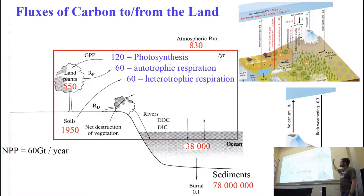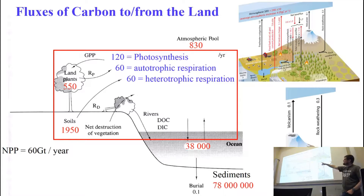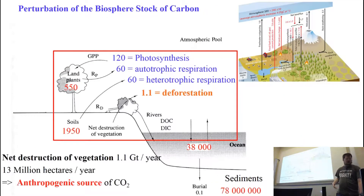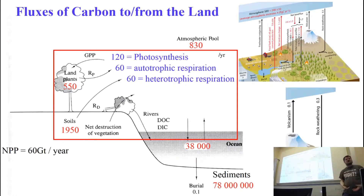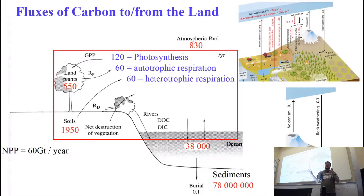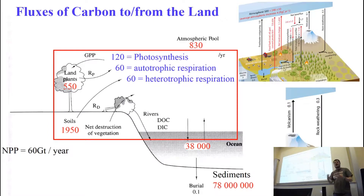We have photosynthesis, which brings down 120 gigatons of carbon per year — which is huge. But most of that comes straight back out because the plants are actively breathing. You also have the decay of organic matter from soils. That basically puts almost all of the carbon that's come out of the atmosphere through photosynthesis back into the atmosphere. So these fluxes between the atmosphere and the terrestrial biosphere are very large, but they're quite nearly in balance.